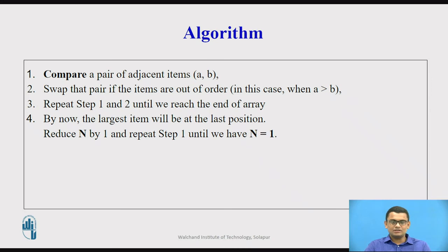Let us try to understand the algorithm of bubble sort. Firstly we have a set of integers, say an array of n elements. In these n elements we compare a pair of adjacent elements a, b where a might be the element on the zeroth index and b might be the element on the first index or i plus 1, that is 0 plus 1 index. The second step is that we swap the pair if the items are out of order, in the case when the first element or the element at the zeroth index is greater than the element at the first index. In this case we swap the two elements.